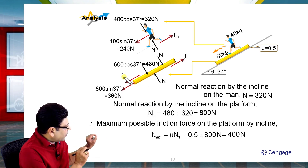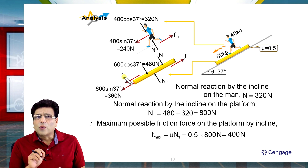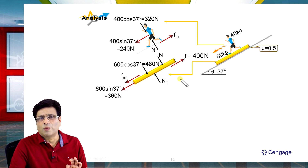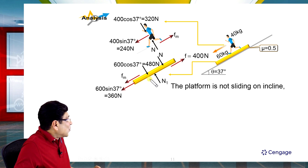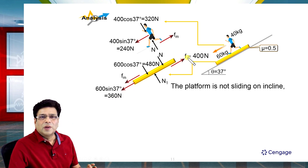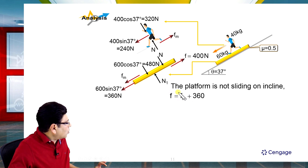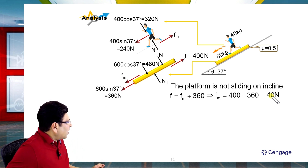Since the platform is not sliding, the forces parallel to the inclined plane must be balanced. The equilibrium equation gives: fm + 360 = f (friction by incline on platform). Substituting f = 400 N, we get fm = 400 - 360 = 40 N. So the friction force acting on the man offered by the platform is 40 N.